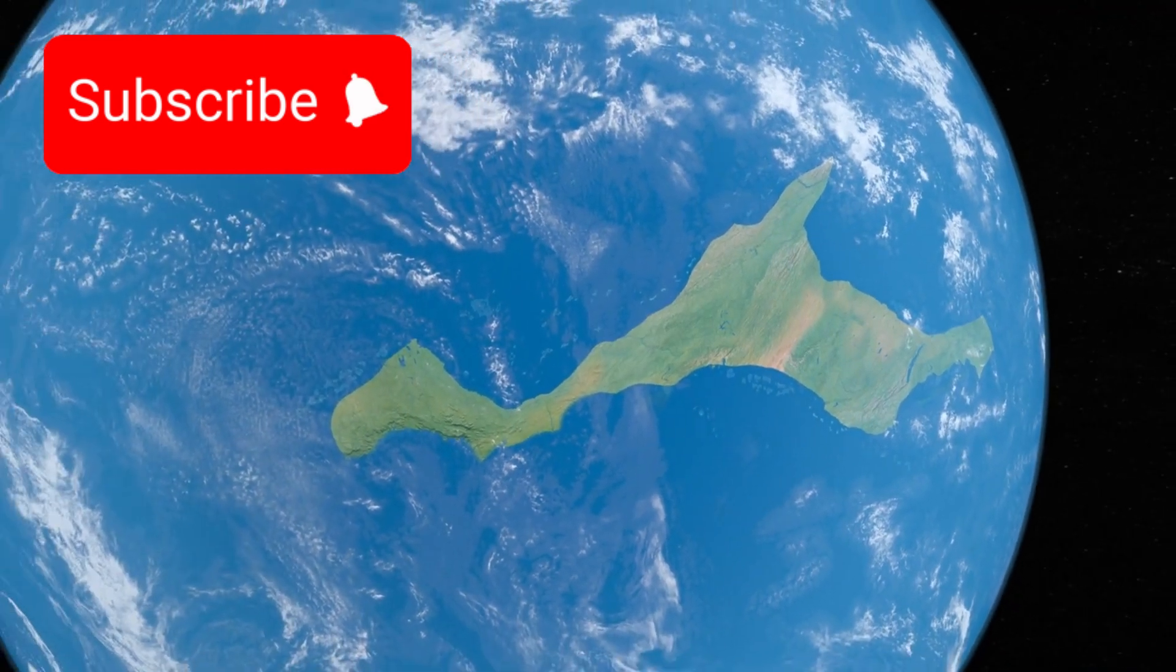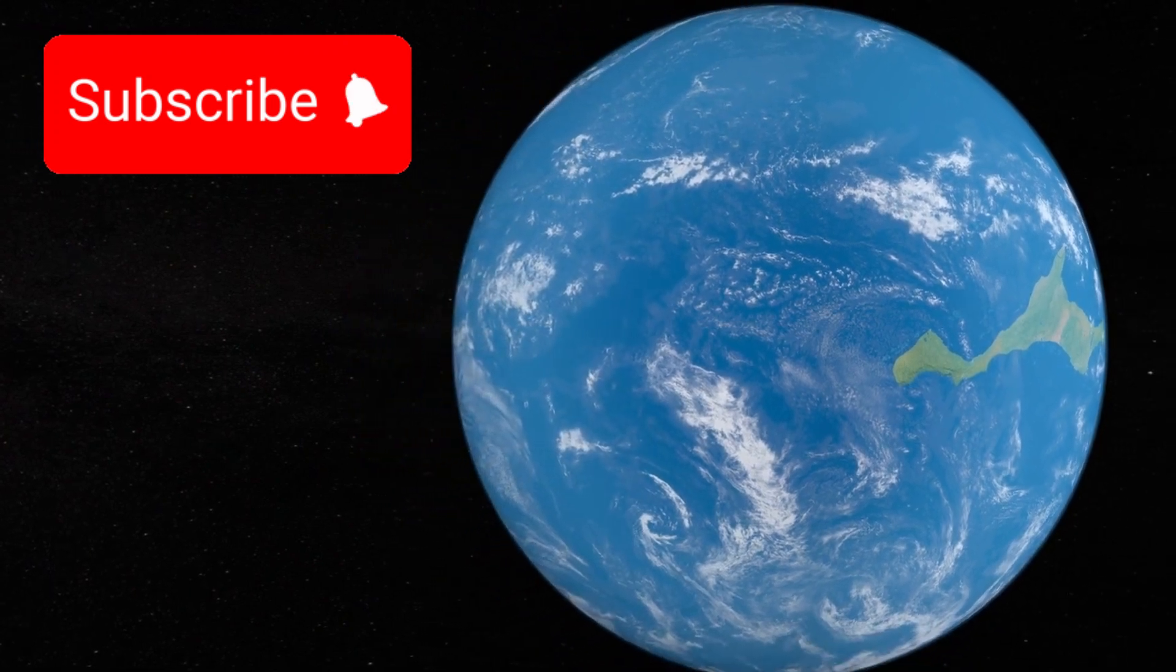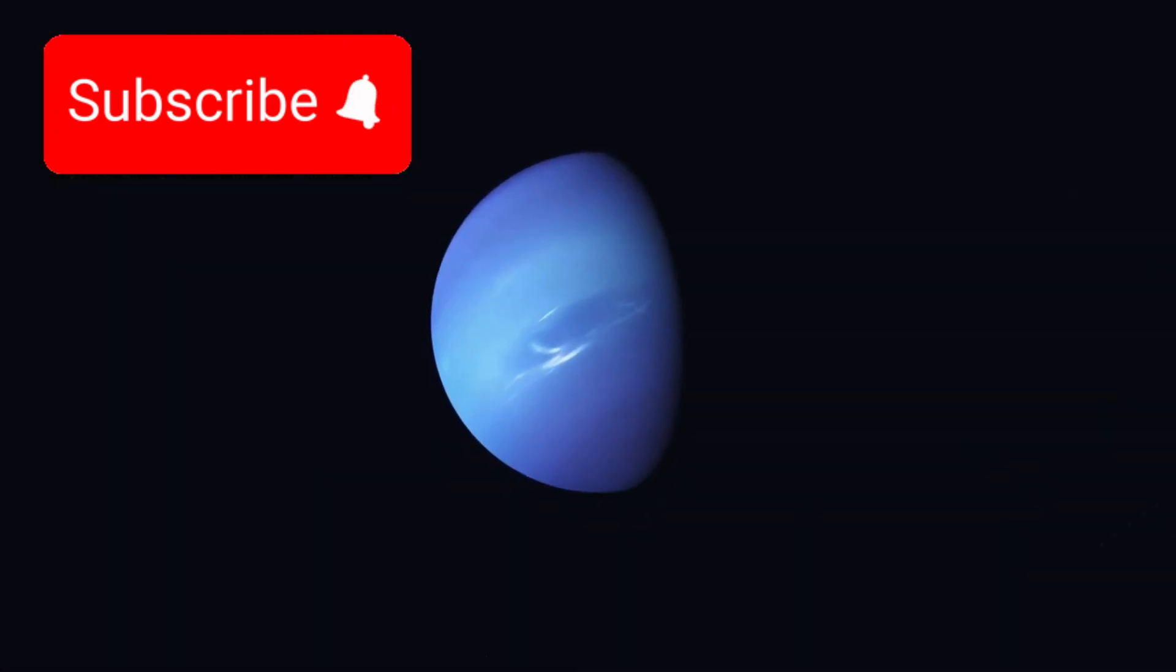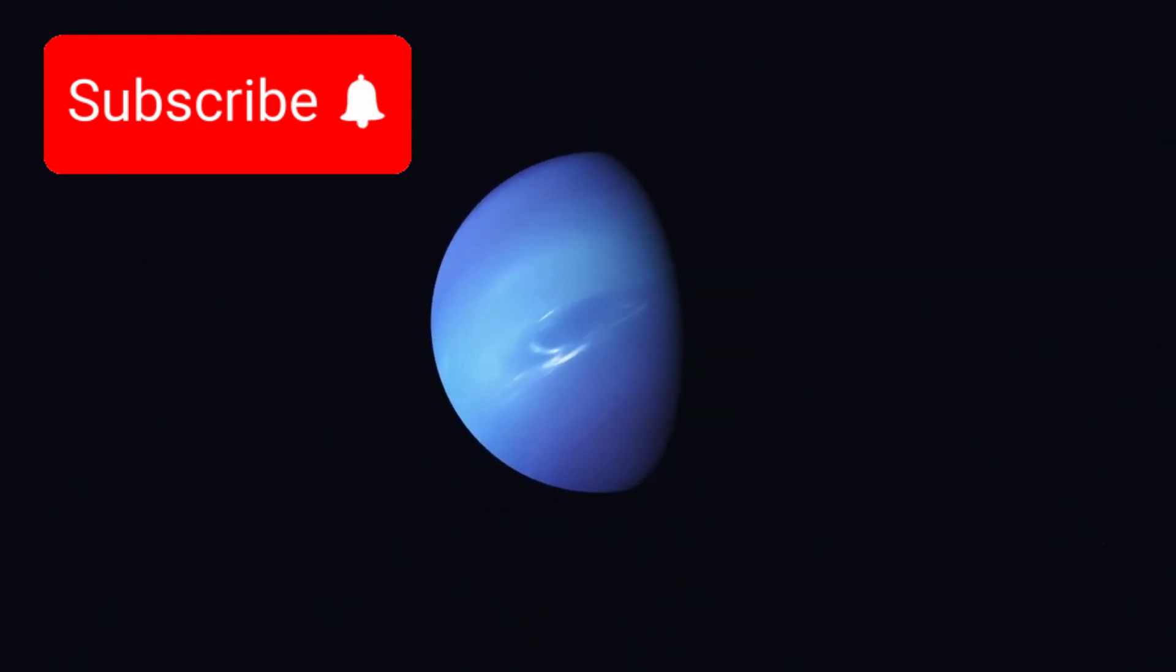This planet is what scientists call a super-Earth, bigger than our own world, yet smaller than Neptune. It falls into a rare category known as sub-Neptunes, a type of planet we don't even have in our own solar system, which makes studying it even more challenging.